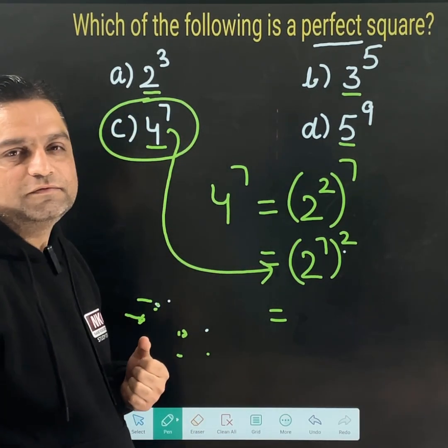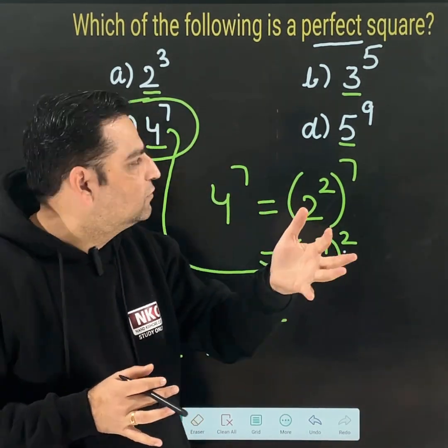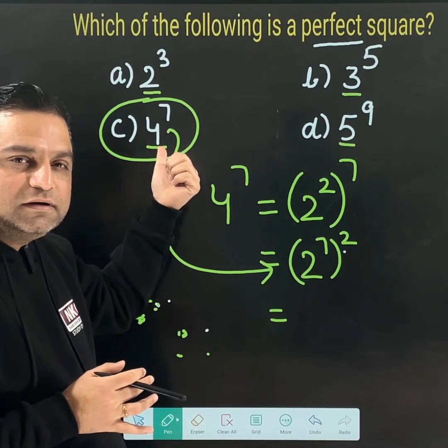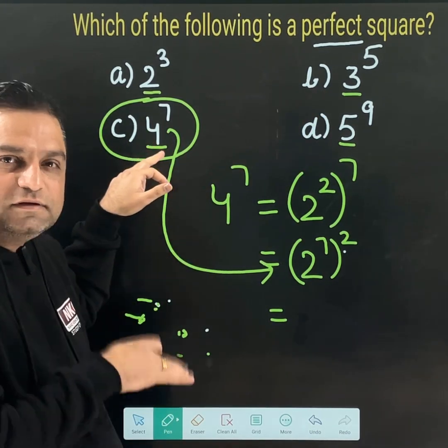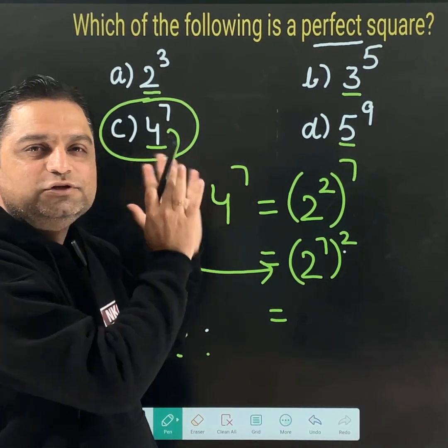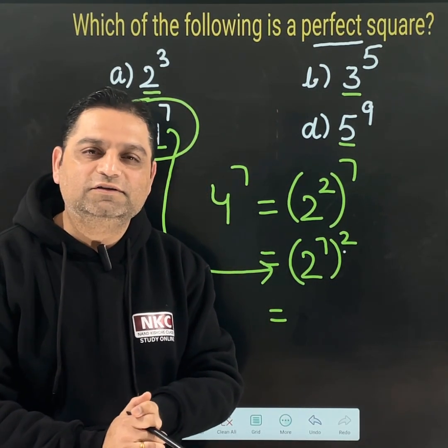I hope all of you are clear with the concept. We have just used a trick. We analyzed the options and the option which could have been written as a square—like 4 can be written as 2 squared. 4 itself is a perfect square. That means this option is a perfect square. I hope you are able to understand. Thank you so much for watching this video.